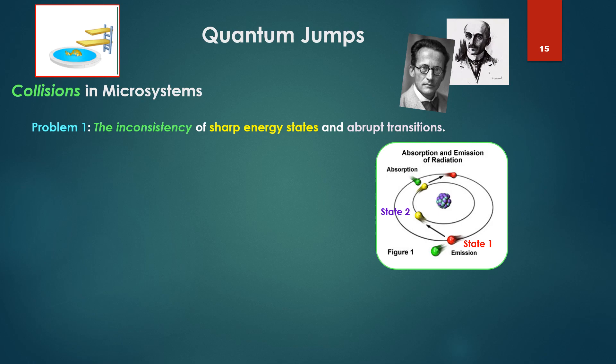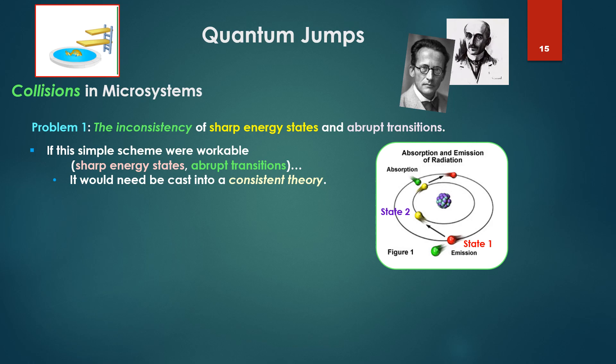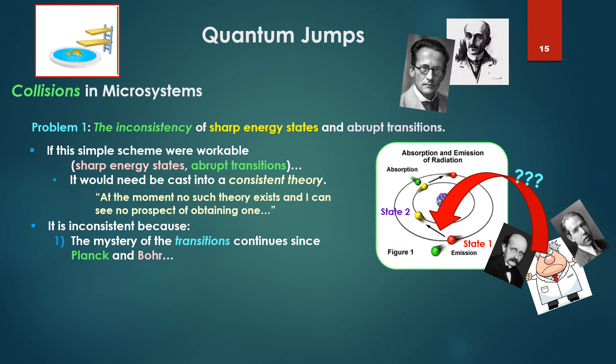Schrödinger begins to look at collisions in microsystems and this whole concept of energy parcels passing along. Problem one is the inconsistency of sharp energy states and abrupt transitions. If this simple scheme were to work of sharp energy states, abrupt transitions, it would need to be cast into a consistent theory. At the moment, no such theory exists and I can see no prospect for obtaining one.